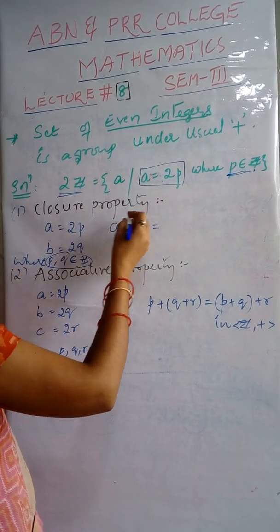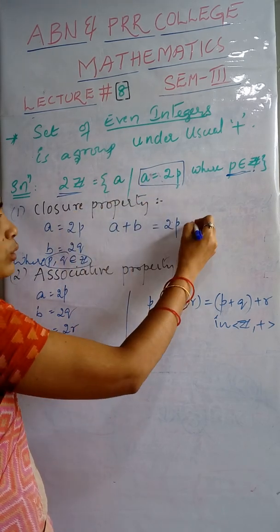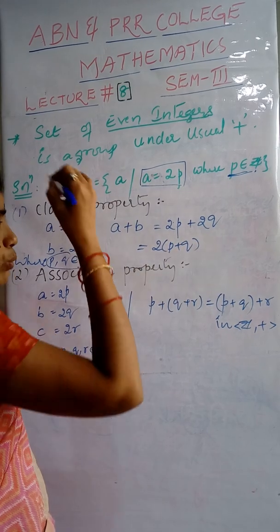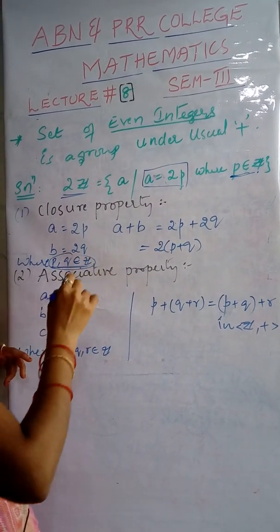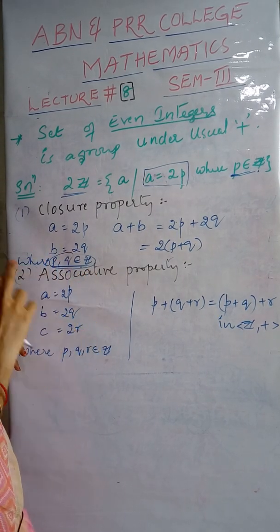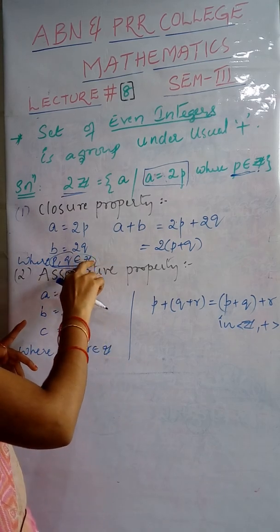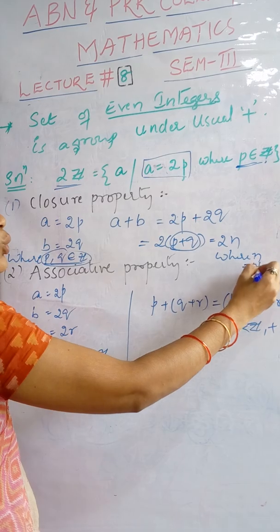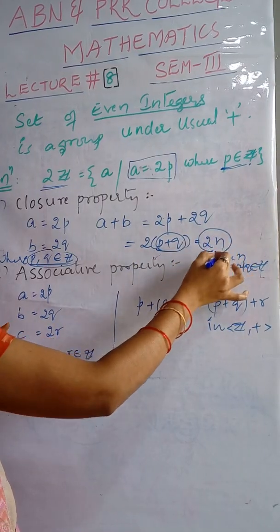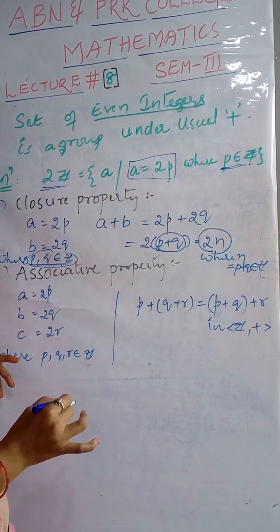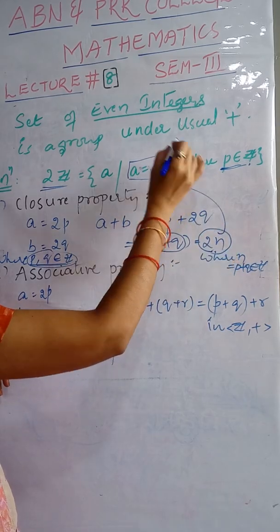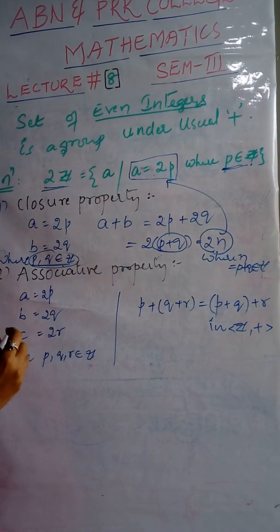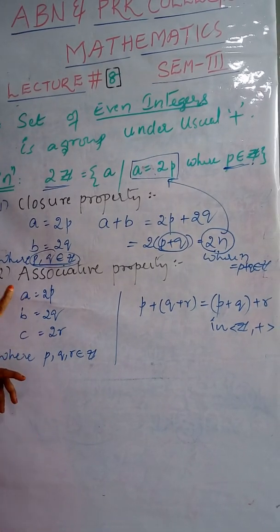Replacing the values: a = 2p and b = 2q, so a+b = 2p + 2q = 2(p+q). Since p and q are integers, their sum p+q is also an integer — we discussed in the last class that closure holds in Z under addition. So we write a+b = 2n where n = p+q is an integer. Thus a+b is of the form 2 times an integer and belongs to the set. Closure property is verified in the set of even integers.